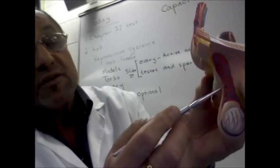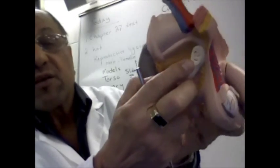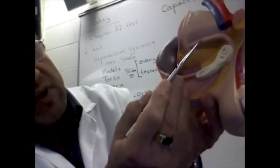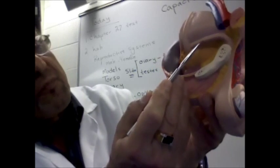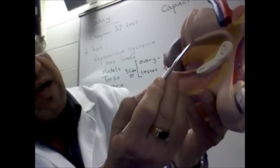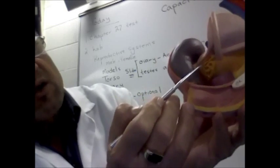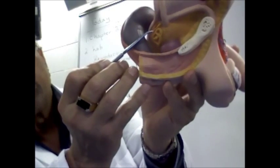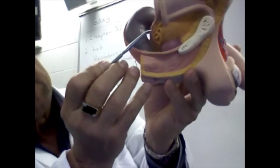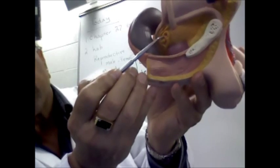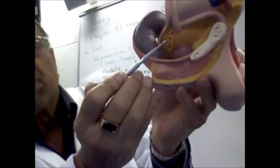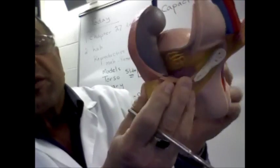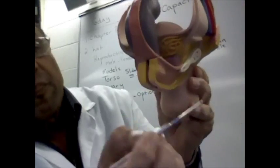If we follow the ductus deferens on the lateral side, we can see it will form the enlarged area known as the ampulla of the ductus deferens, and next to it is the seminal vesicle. If we turn this model around we can also see the prostate gland.